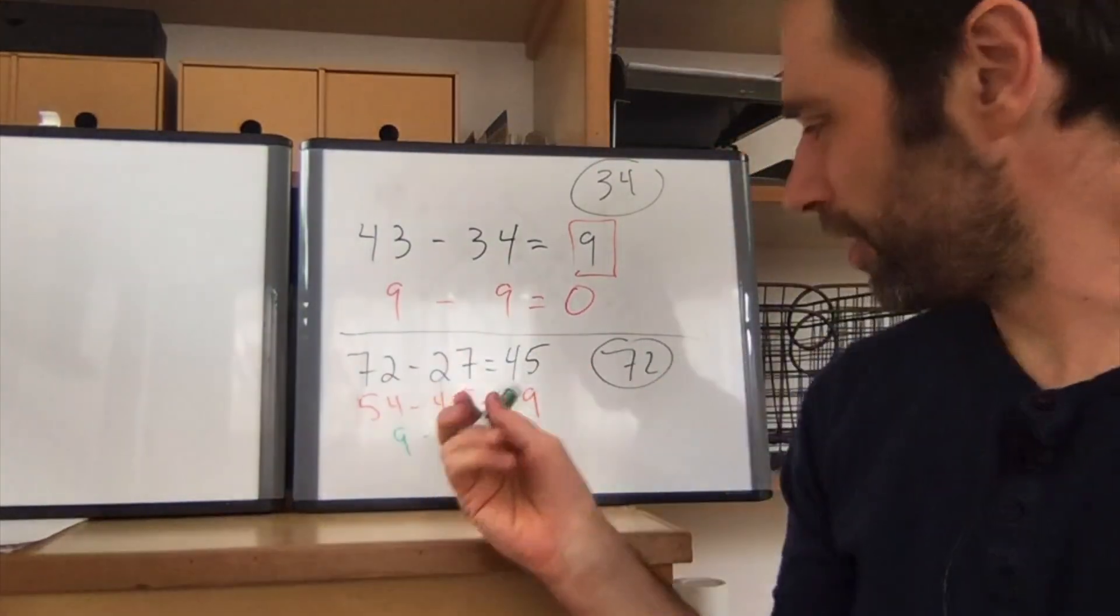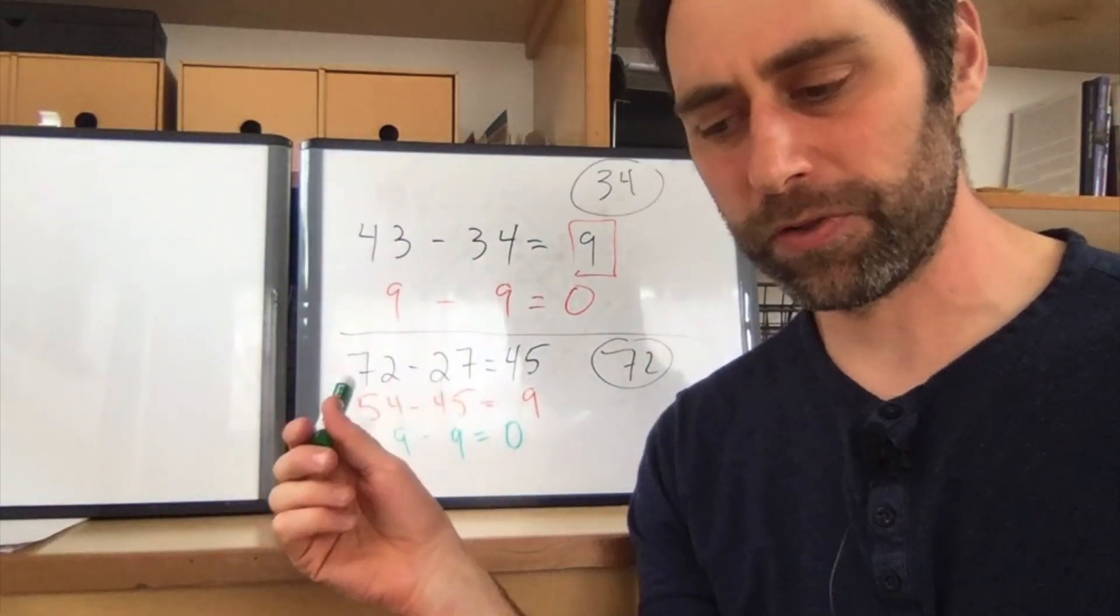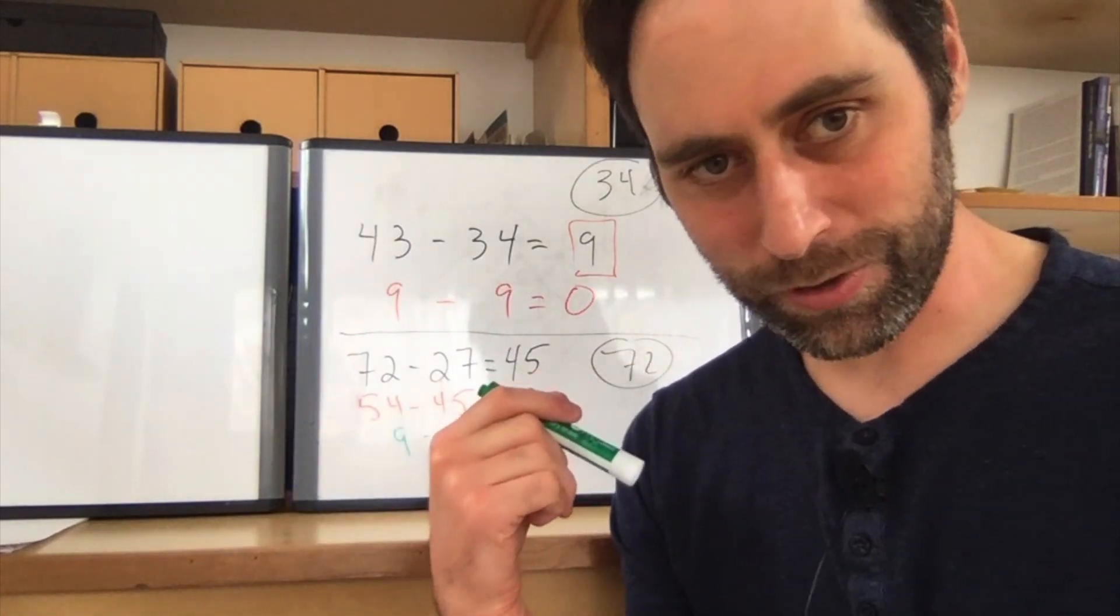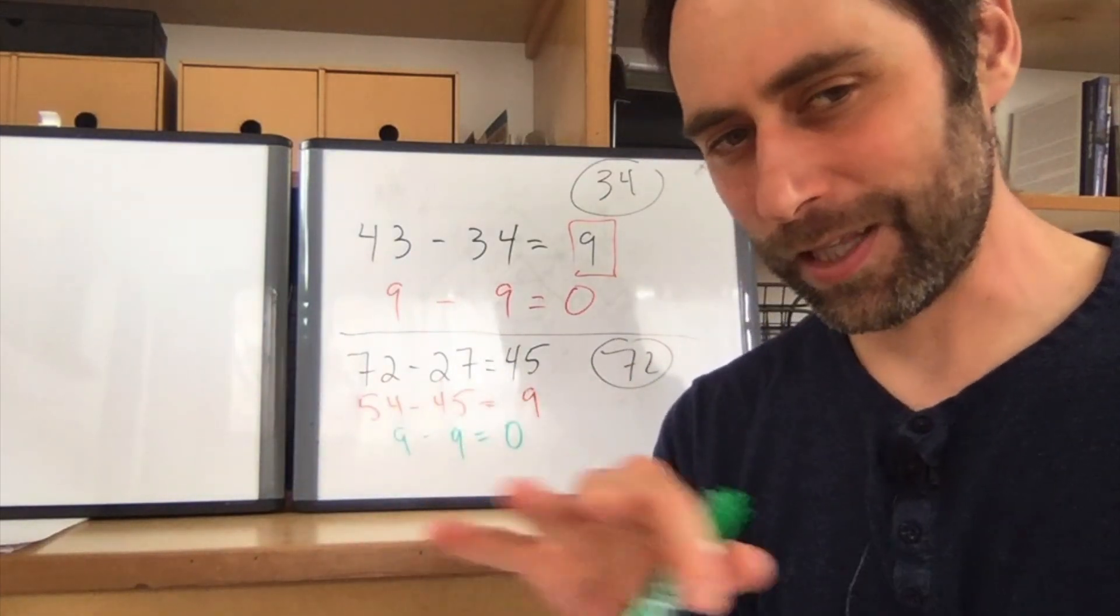But what's really weird is I hit 9 on the way both times. Now, will I always hit 9? Or did I just pick numbers that happen to hit 9? And that's a trick.